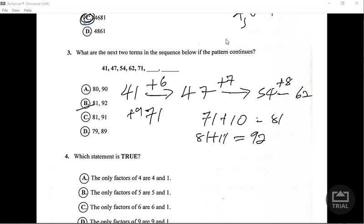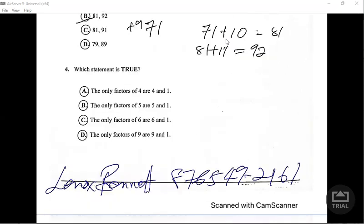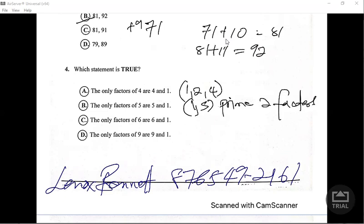Let's look at number four. It says which statement is true? The only factors of four are four and one, that is a lie. Factors of four are one, two, and four. The only factors of five are one and five, that is correct since five is a prime number. So this will be correct.